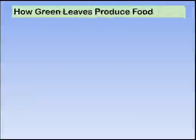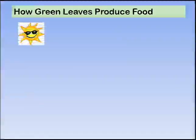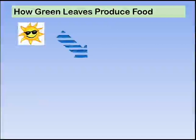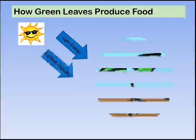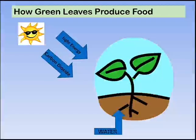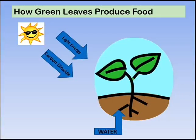How do green leaves produce food? Green leaves can produce food with the help of light energy, carbon dioxide, and water. This process is called photosynthesis. In photosynthesis, light energy from the sun is absorbed by the green substance called chlorophyll.